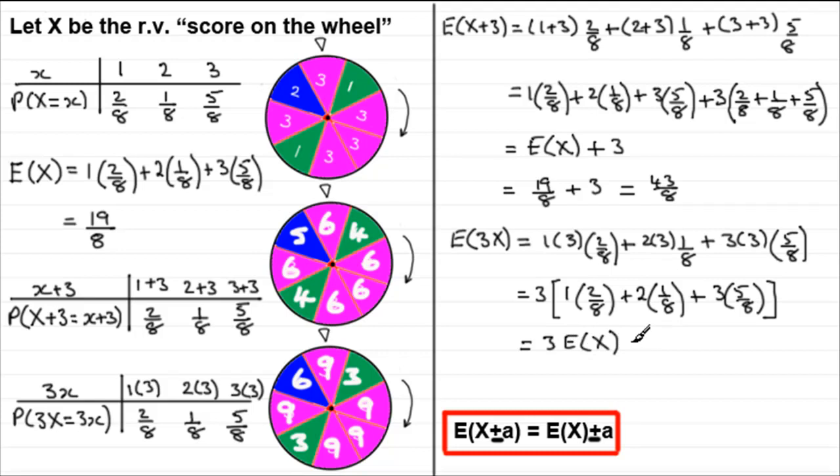So we have a new rule that multiplying by 3 with that random variable, doing E of 3X becomes 3E of X. We just take that constant out in front of E of X. So in general, what we find is that if we multiply a random variable X by a constant a, E of aX turns out to be aE of X. So again, we don't have to do any of this working if we can learn this rule. So in this case, all we need to do is just simply times E of X, which was 19 over 8, by 3. And if you do that, what you get is 57 over 8.